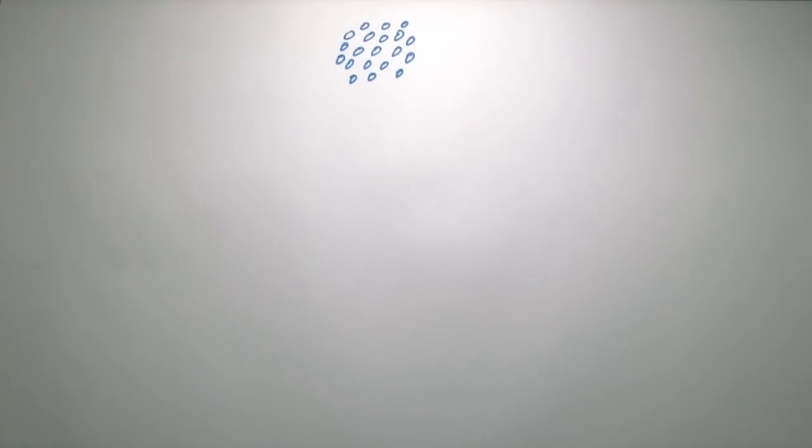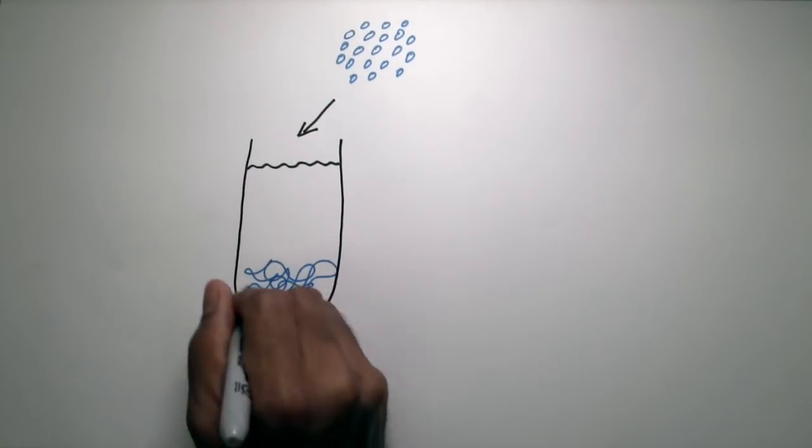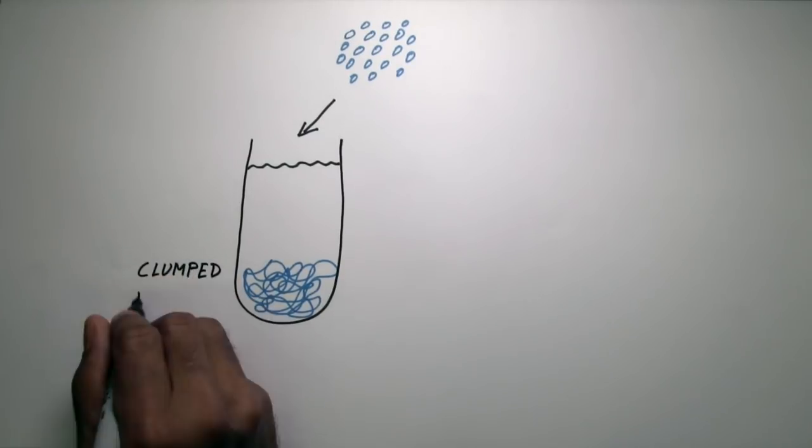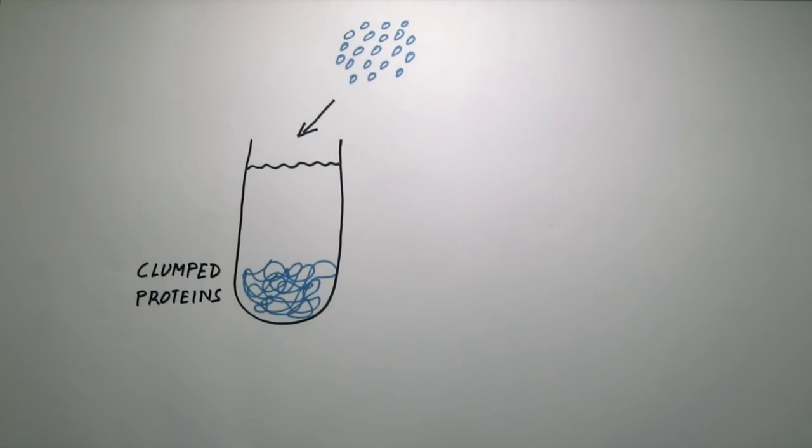But if we tried to crowd that much protein into a test tube, the proteins would all stick together in a big clump. So cells must have specific ways to prevent proteins from clumping together.